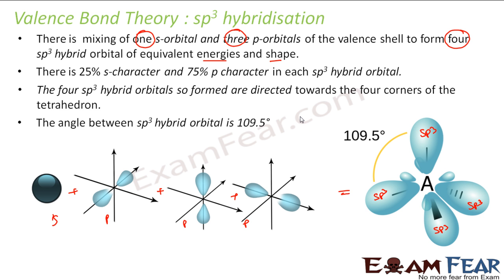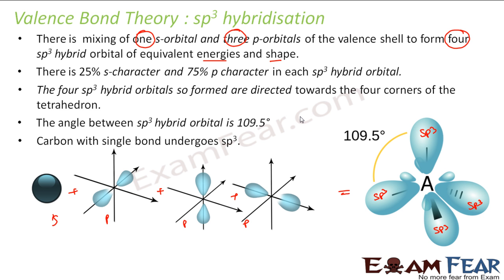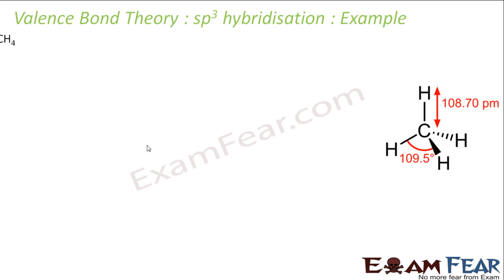Let's take some examples of SP3 hybridization. Note that carbon with a single bond goes for SP3 hybridization. Let's take the example of methane, CH4.